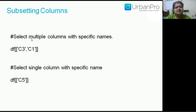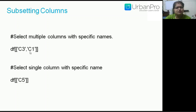For subsetting columns, to select a single column with a specific name, give the data frame name followed by the column name in brackets and quotes — that's it. To retrieve multiple columns, include additional column names separated by commas, for example df[['C3', 'C1']].